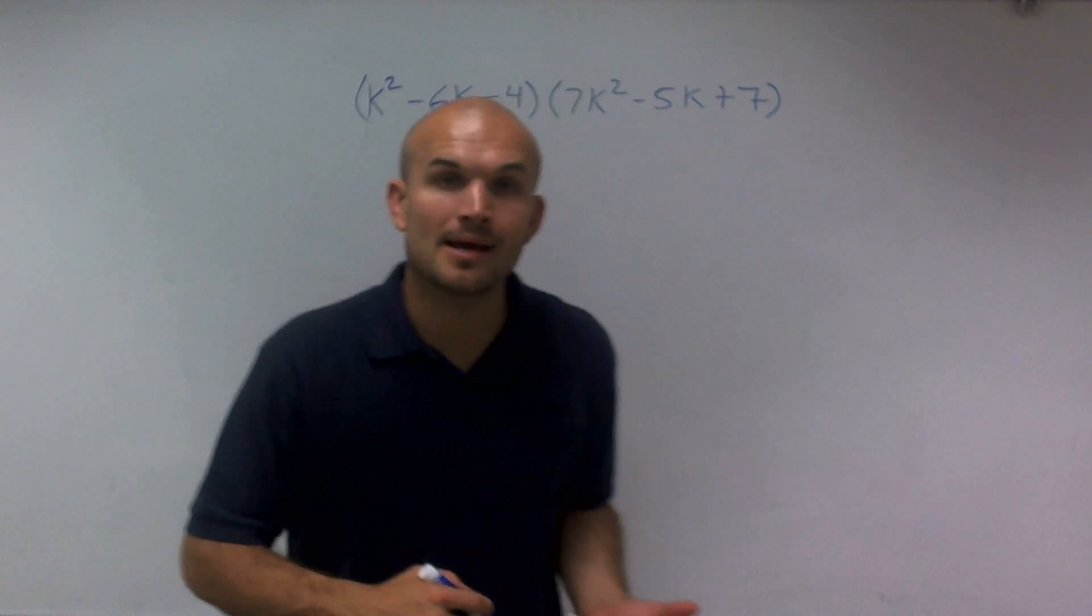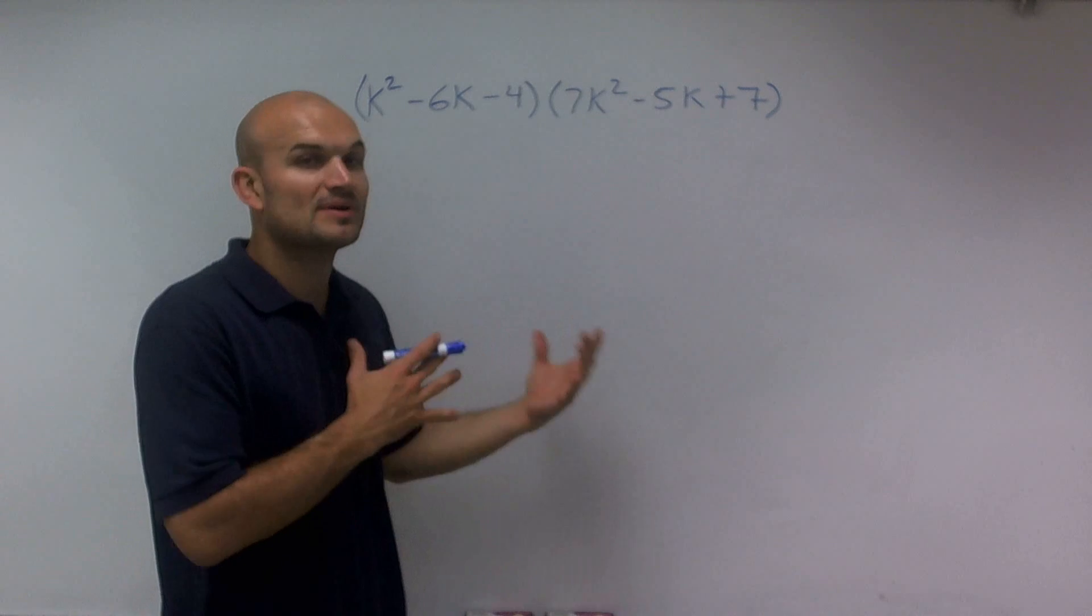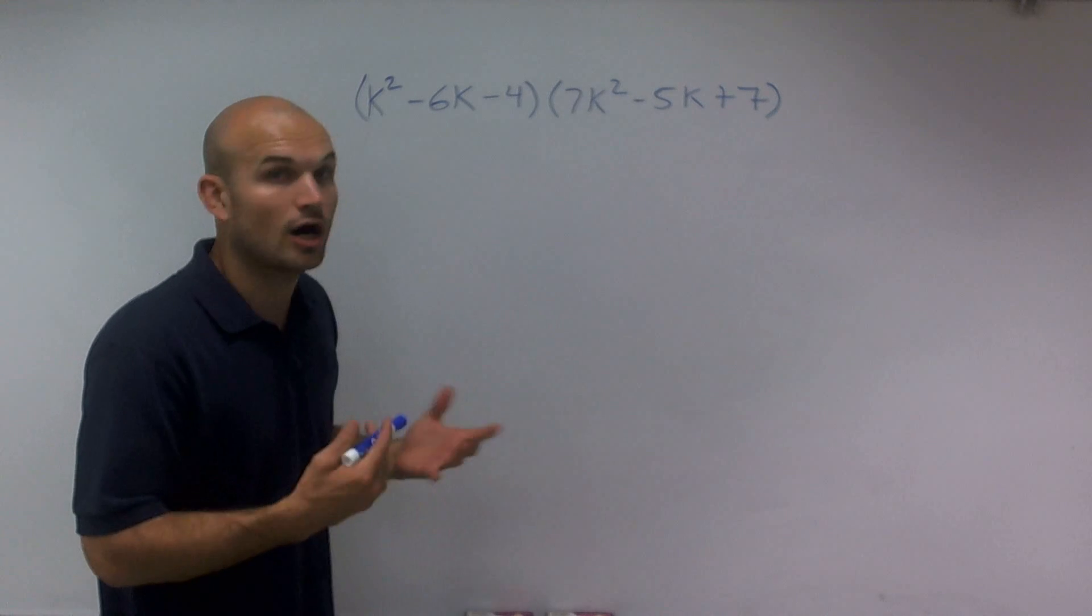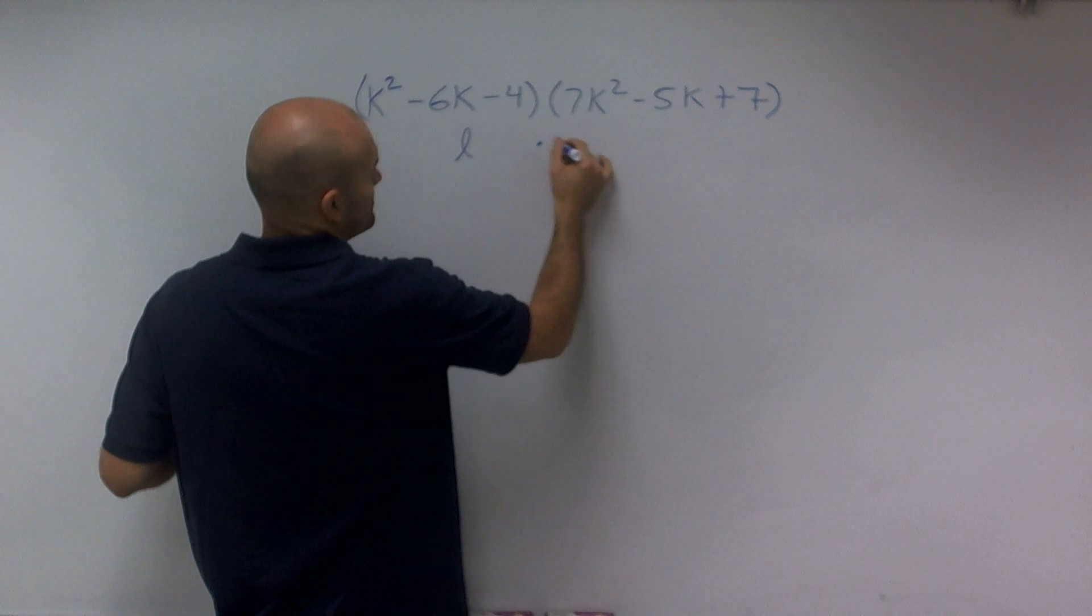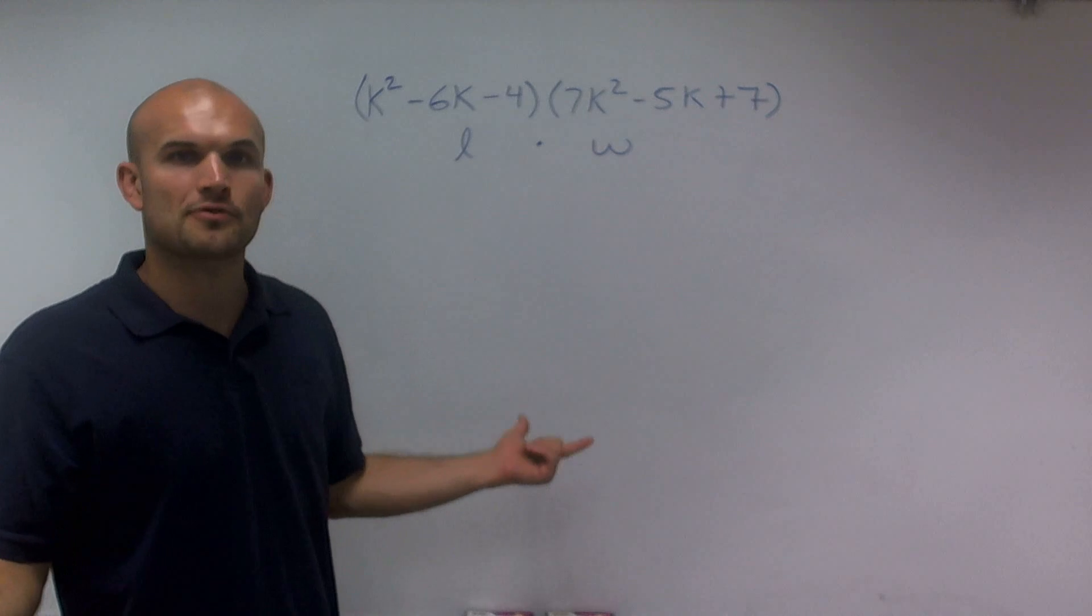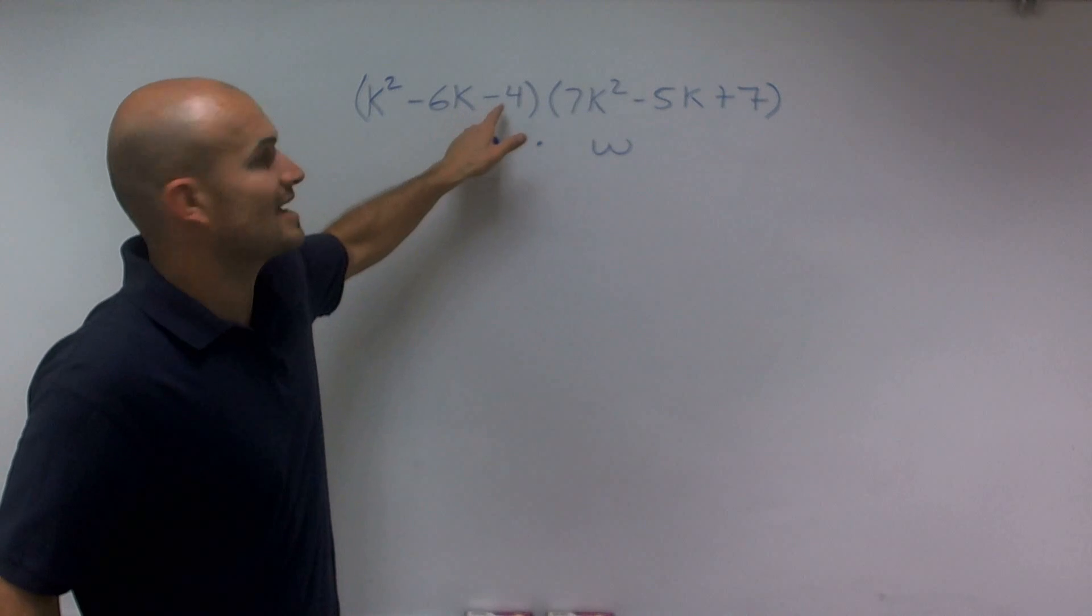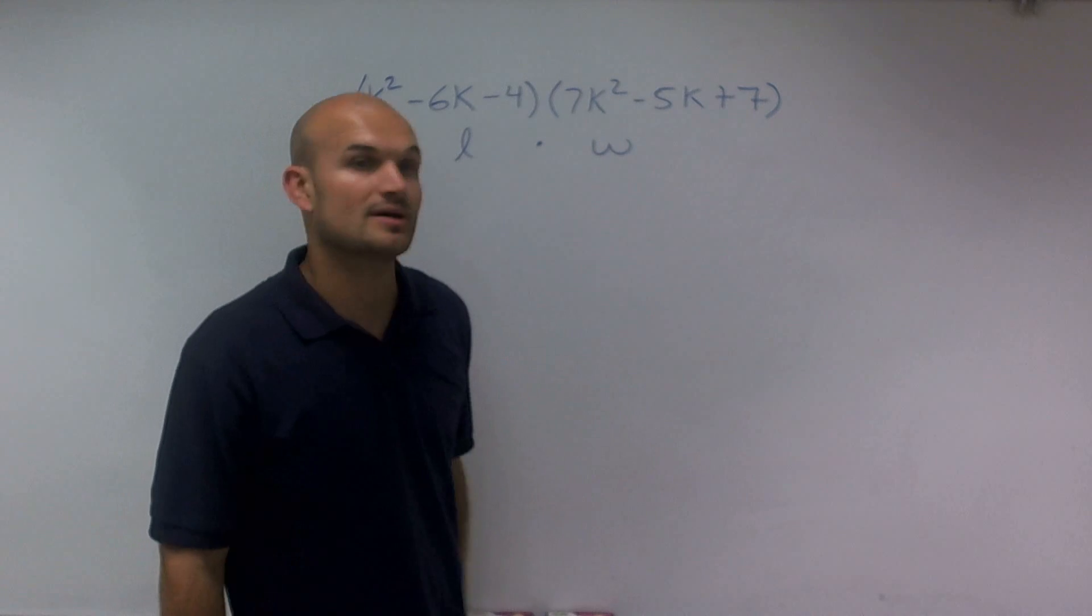So what I'm going to do is I'm going to use the multiplication of two trinomials, represent that as an area of a rectangle. It's very similar to multiplying a length times width, where the length, rather than being an integer like 3, is going to represent k squared minus 6k minus 4, and my width will be 7k squared minus 5k plus 7.